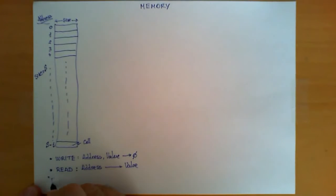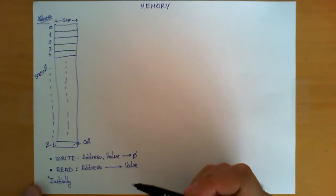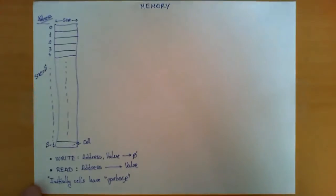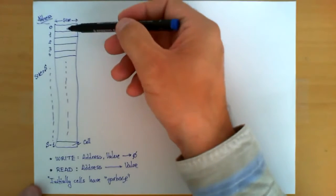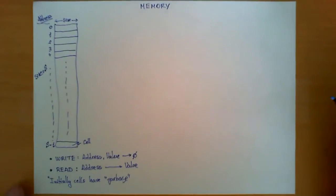And a little rule to remember: initially, by initially what I mean is when you turn on one of these memory chips in a computer system, all cells have stored garbage. In other words, when you turn on one of these chips, you cannot assume anything about the values that are stored in all these cells.